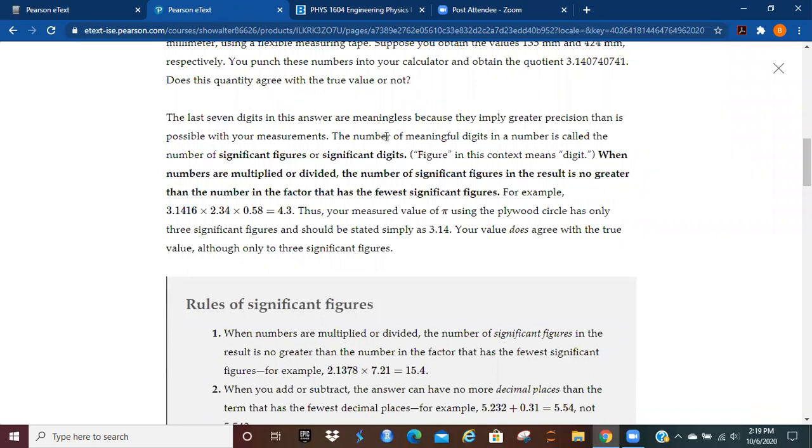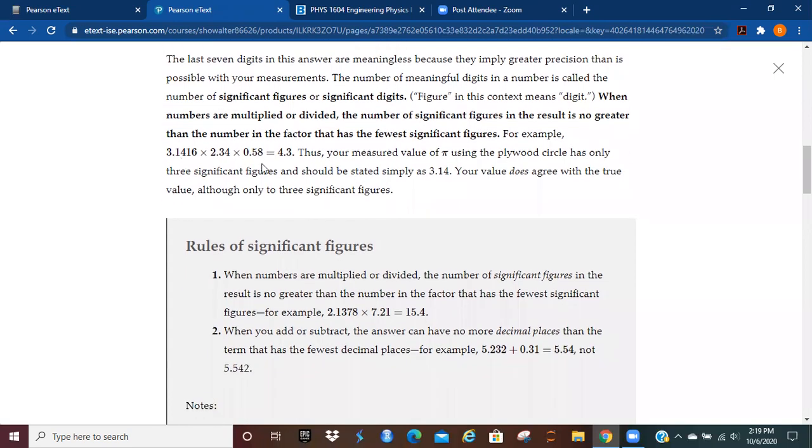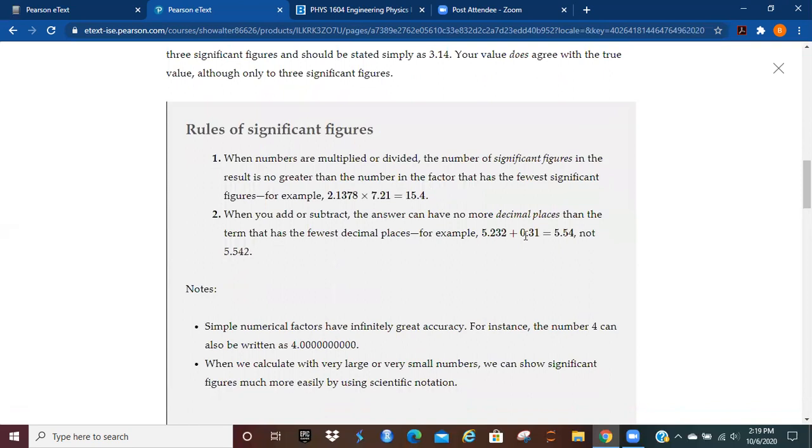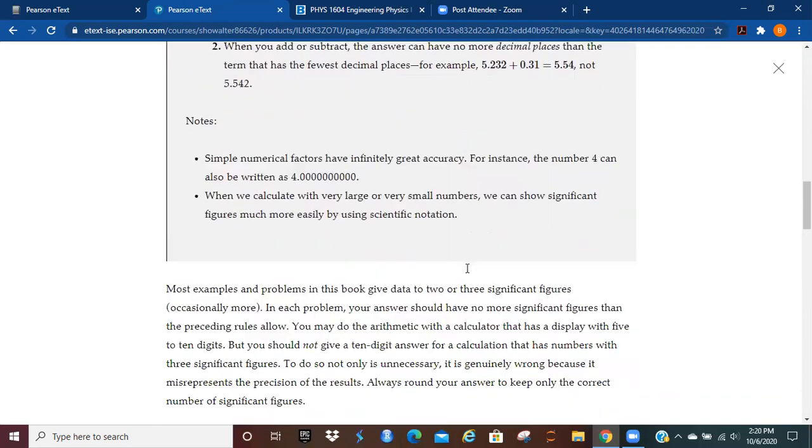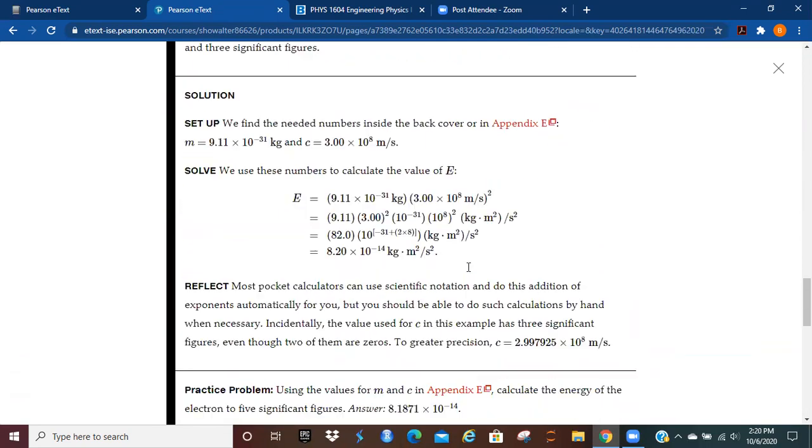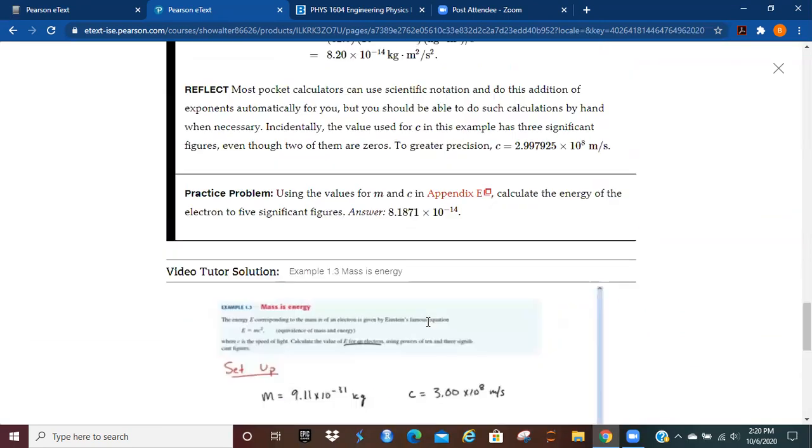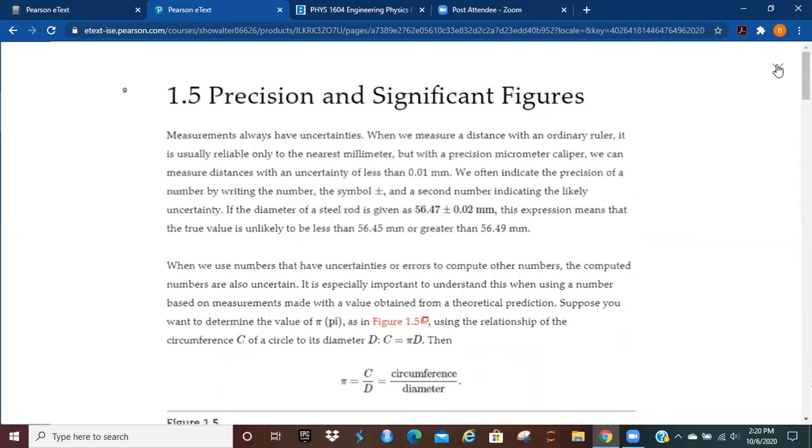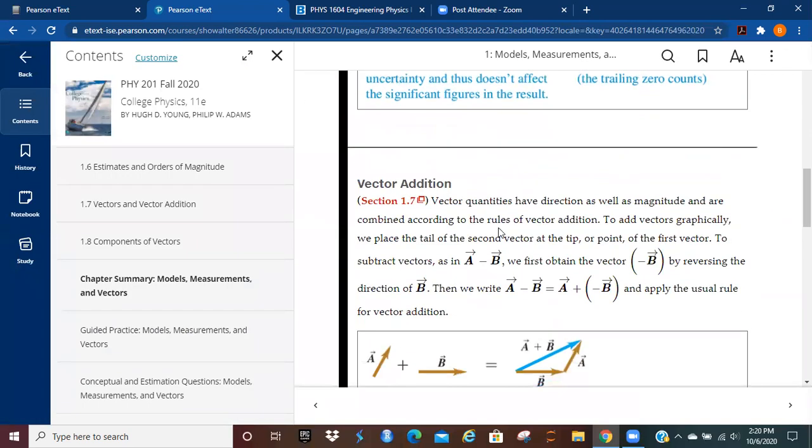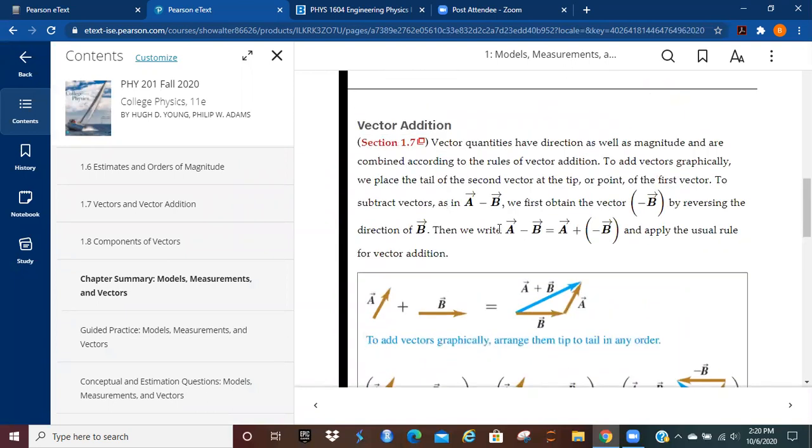And when we say significant figures, we're also meaning significant digits. When numbers are multiplied or divided, the number of significant figures in the result is no greater than the factor that has the fewest significant figures. This is the same example as what we had worked before. And here are more of those particular type of examples. So again, we've got some problems here. It'd be good for you to work through. I won't do it in this lecture because I'm trying to save recording time for other things. And we have a storage limit.